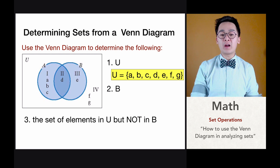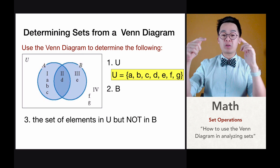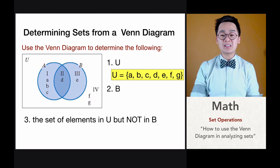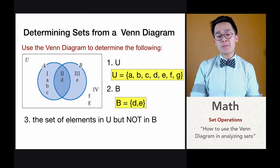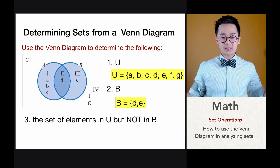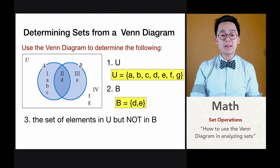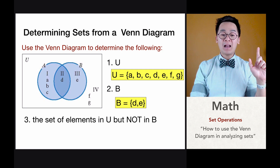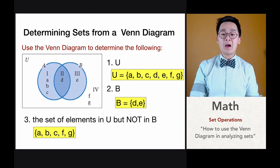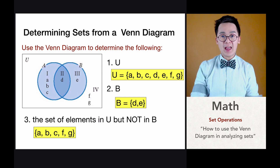If we're just working on set B, groups 2 and 3 are inside set B, so the elements of set B are letter D and letter E. And if we're going to find the elements in the union set but not found inside set B, we're looking at A, B, C and the outside elements F and G. So the elements in U but not in B are A, B, C, F and G.